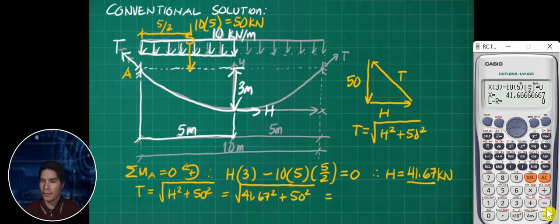Therefore, that is square root of 41.67 squared plus 50 squared. That value is 65.09 kN. We've solved the tension at ends. This is the answer.